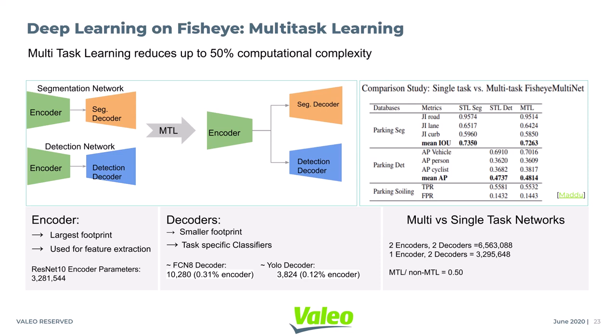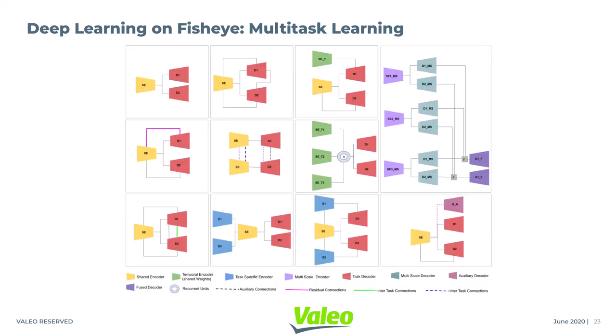A simple example with a ResNet-10 encoder, FCN-8, and YOLO decoders is presented for understanding parameter distribution. We have also explored various architectures for multi-task learning, from single-stream encoders to multi-stream encoders and auxiliary decoders. In fact, some of the figures shown are abstract representations of state-of-the-art algorithms like Mask R-CNN, FlowNet, and DeepViVO.